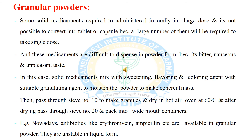The granules are dried in a hot-air oven at 60 degrees Celsius, then after drying passed through sieve number 20, and packed in a wide-mouth container. Examples of powders used in granular form are antibiotics like erythromycin and ampicillin, which are available as granular powder because they are unstable in liquid form.